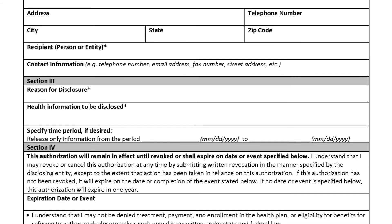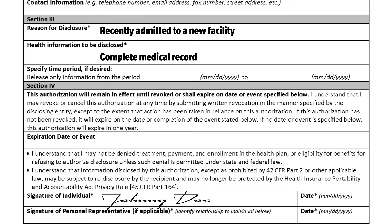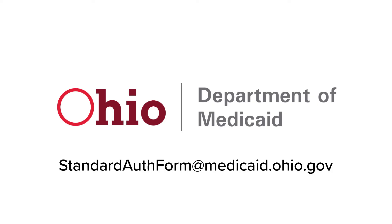When completing the form, please be very clear about what records or information are being requested. Asking for only what is needed and being very specific may speed up the processing of your request. If you have any questions, feel free to contact standardoffform at medicaid.ohio.gov.